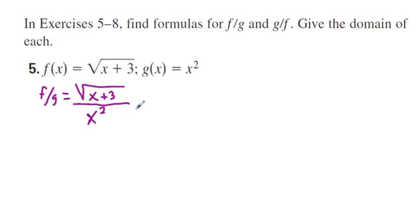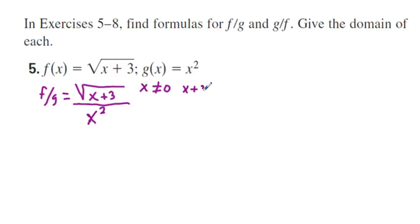Dividing creates a new restriction because we cannot divide by 0, so x cannot equal 0 since x squared cannot equal 0. Also, inside the radical, x plus 3 has to be greater than or equal to 0, so x has to be greater than or equal to negative 3. Looking at this function on a number line, the critical numbers are negative 3 and 0.